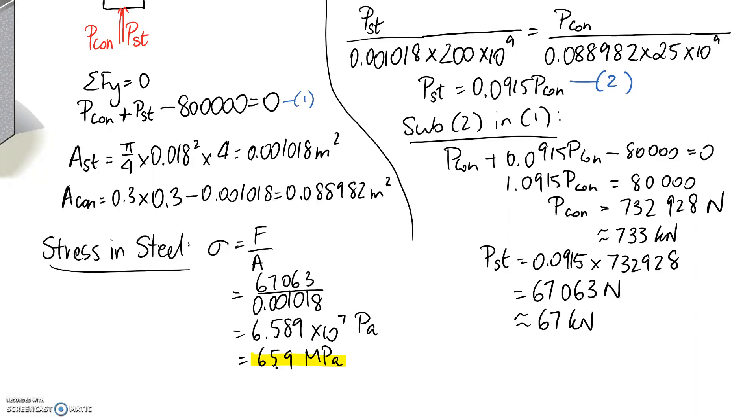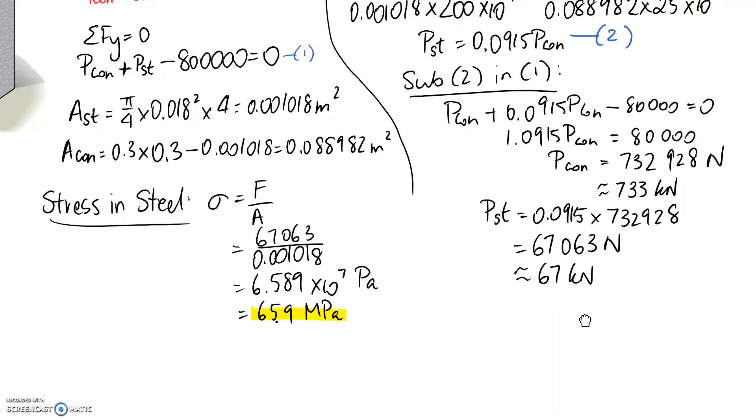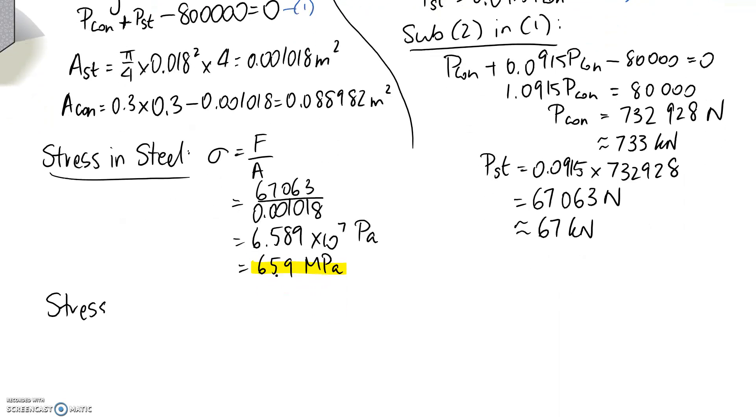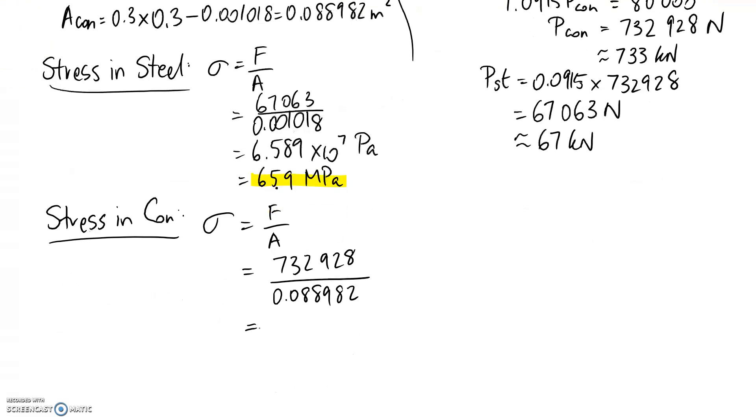Alright, so now what we need to do is find the stress in the concrete component. Same process. Stress is equal to the force divided by the cross-sectional area. We found that the force inside the concrete was this in newtons. And the area for the concrete was this in meters squared. We've got everything in base units, which means that we're going to get pascals out at the end for stress.